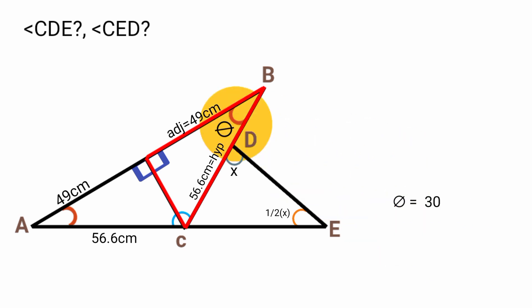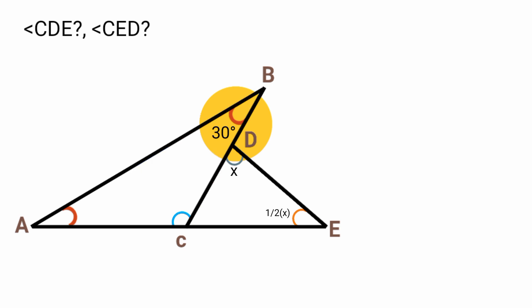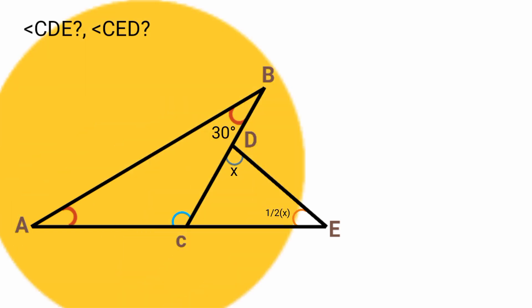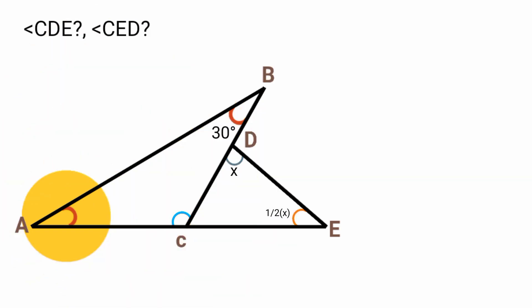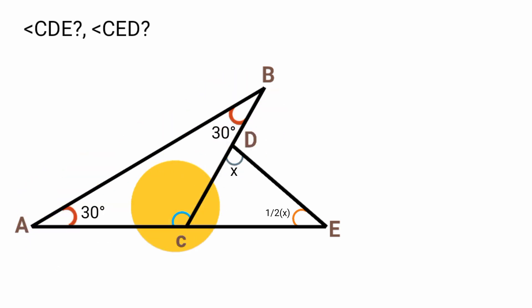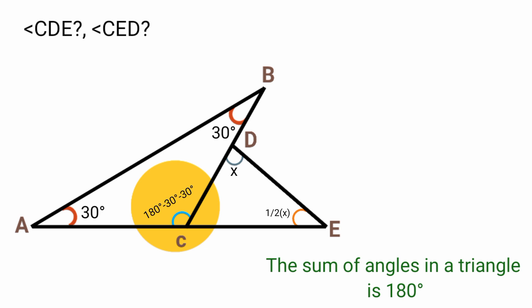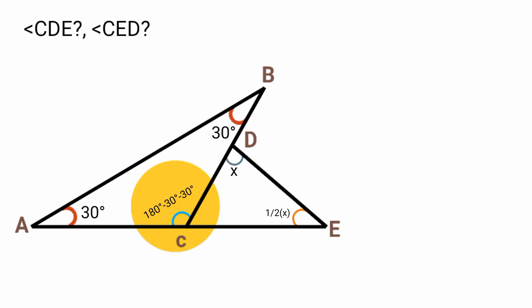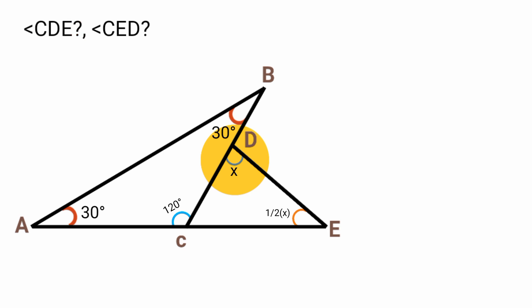So the base angle is 30 degrees. Recall that both base angles of triangle ABC are equal, so the other base angle is also 30 degrees. The vertex angle ACB is therefore 180° minus 30° minus 30°, which equals 120 degrees.